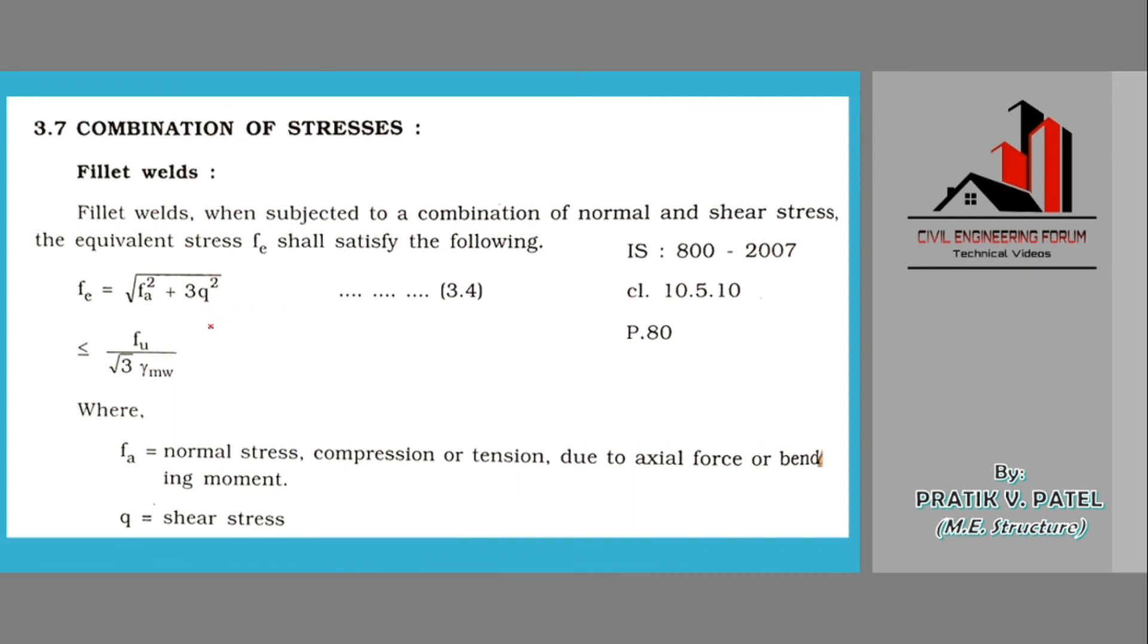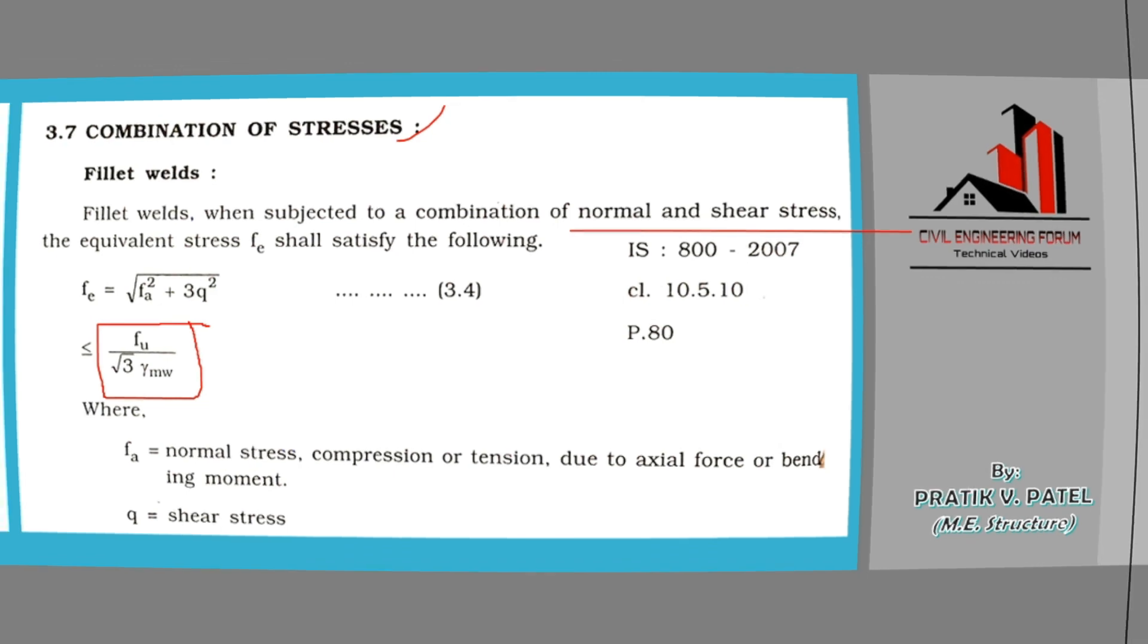The condition here which should be satisfied is it should be less than fu, that is ultimate stress of the weld 410, divided by square root 3 into gamma mw. Again, gamma mw here is given in table number 5 and differs from shop weld to field weld. So this is all about the combination of stresses in fillet weld as normal and shear. This is all about today, thank you for watching and wait for the next video.